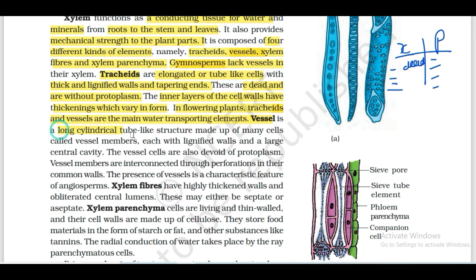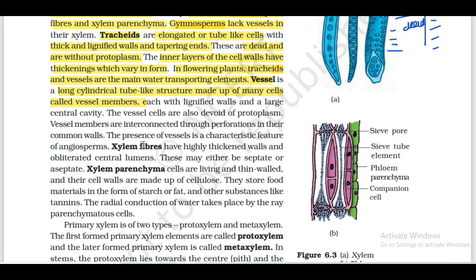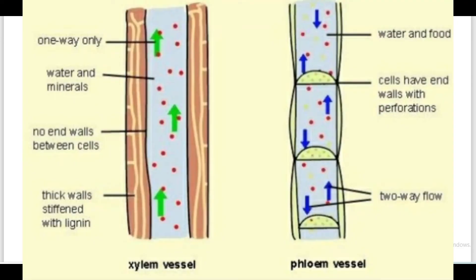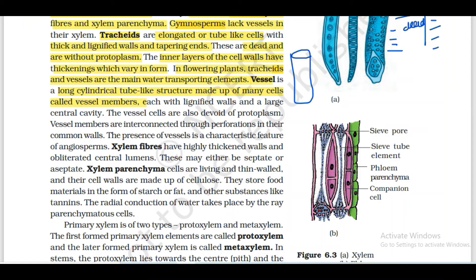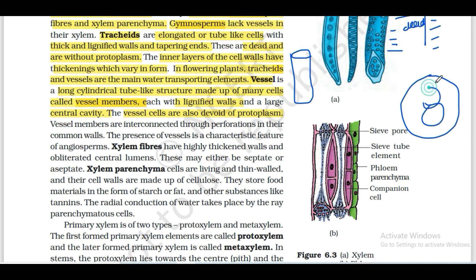The vessel is a long cylindrical tube-like structure made up of many cells called vessel members. Each vessel member has a lignified wall and a large central cavity. Vessels are devoid of protoplasm - there is no cytoplasm or nucleus in the cells at maturity.